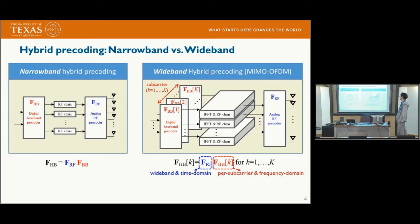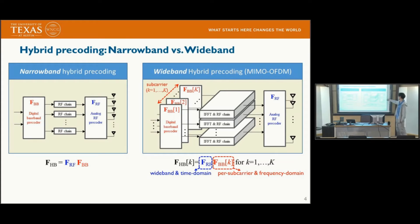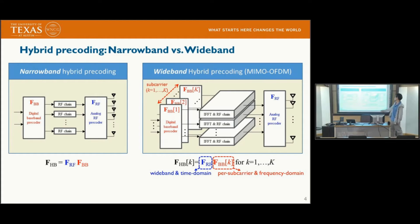We assume MIMO-OFDM. In the right figure, the baseband pre-coding is performed before the IFFT, so it is performed in the frequency domain and can adapt to frequency-selective channels. On the other hand, the analog pre-coder FRF is performed after the IFFT, so it is performed in the time domain and cannot adapt to frequency-selective channels. This is a distinguishing point compared to narrowband systems.